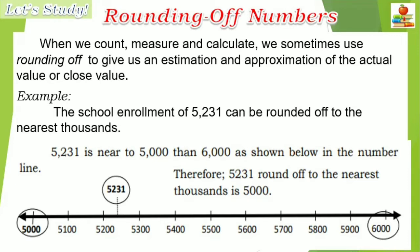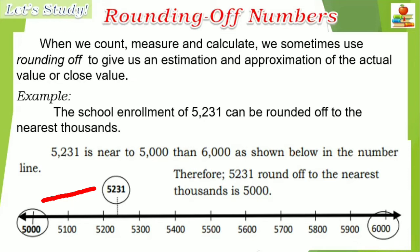After you have learned how to arrange numbers, we will now study how to round off numbers. When we count, measure, and calculate, we sometimes use rounding off to give us an estimation and approximation of the actual value. For example, a school enrollment of 5,231 can be rounded off to the nearest thousand. As we can see, 5,231 is nearer to 5,000 than 6,000 as shown on the number line. Therefore, 5,231 rounded off to the nearest thousands is 5,000.